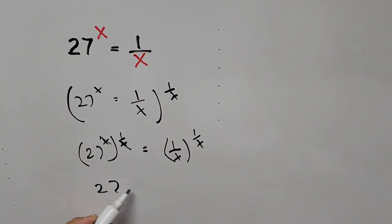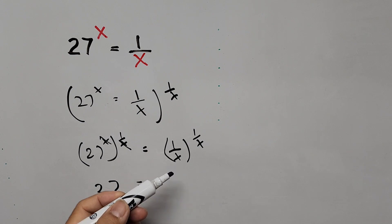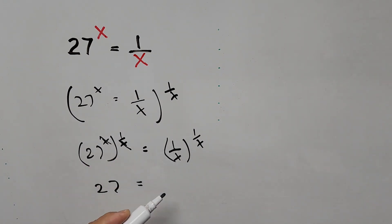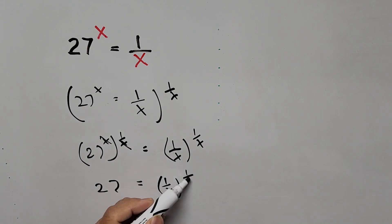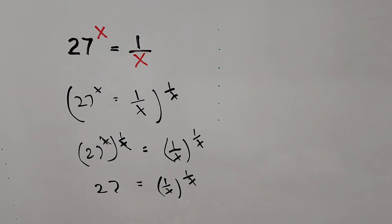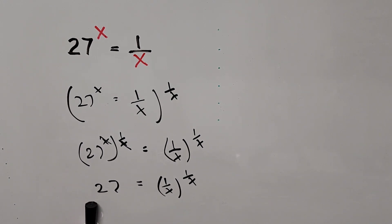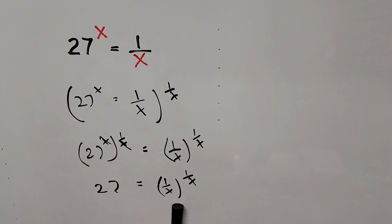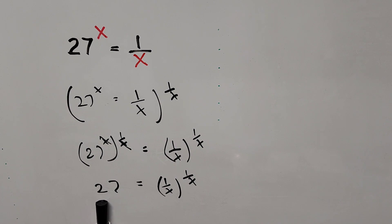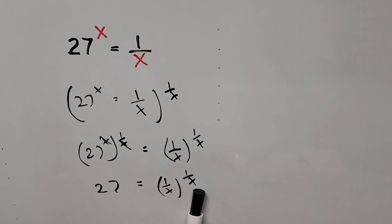So this is now 27 equals the right-hand side. If you notice, the base is exactly the same as its exponent — that is, 1 over x raised to the power of 1 over x. On the right-hand side, the base is the same as its exponent, and the left-hand side is 27. So we're expressing 27 into exponential form to make the base look the same way as its exponent on the right-hand side.